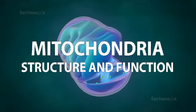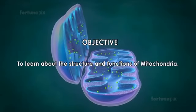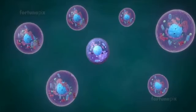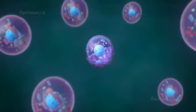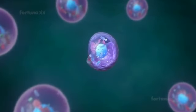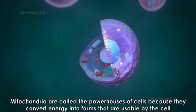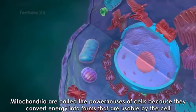Mitochondria structure and function. Objective: to learn about the structure and functions of mitochondria. Mitochondria are located in the cytoplasm of cells and are among the largest cell organelles. They're called powerhouses of cells because they convert energy into forms that are usable by the cell.